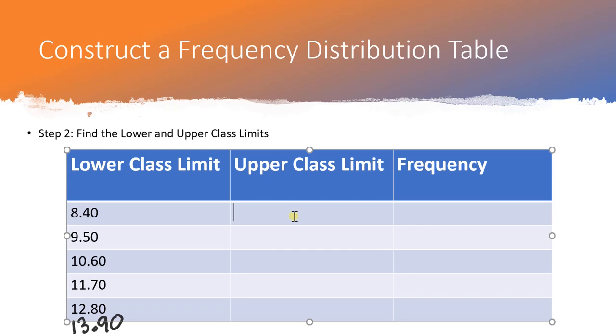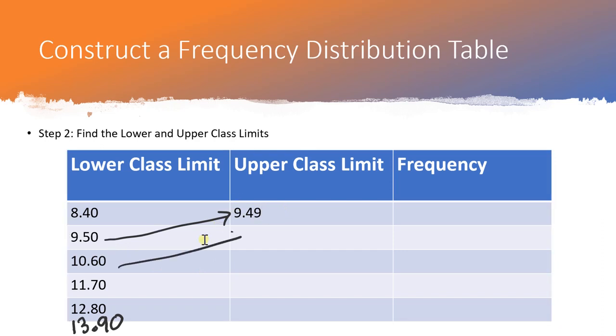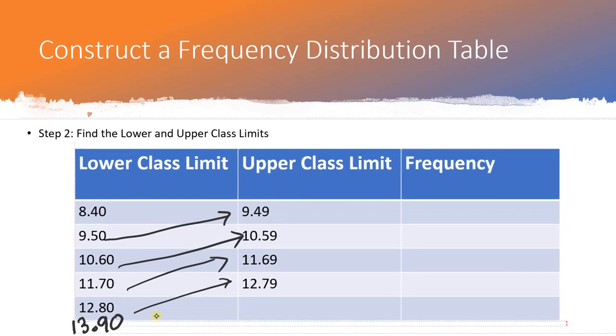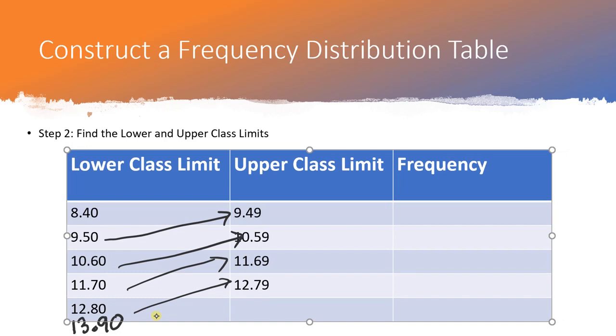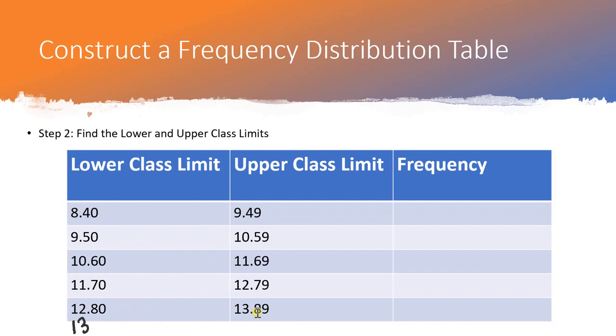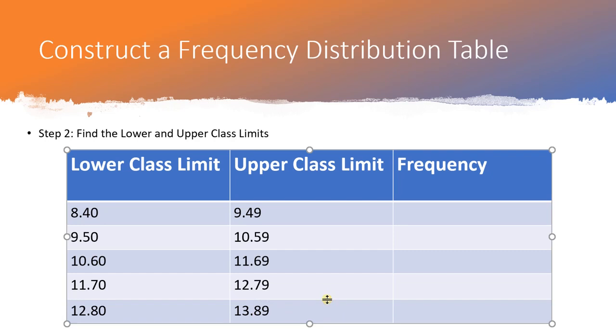Now to find my upper class limits, basically what I want to do is go one less, a little bit less than the next lower class limit. So for this upper class limit, it's going to be 9.49. See, it's just a little bit less than the next lower class limit. Here, this one would be 10.59. You guys are getting it. 11.69. Lastly, you see that this is why it's nice for us to have gone a little bit further in finding that lower class limit of the class that doesn't exist, because it helps us find this upper class limit here. So it would be 13.89. Let's erase all the stuff we don't need. This is all of our upper and lower class limits.